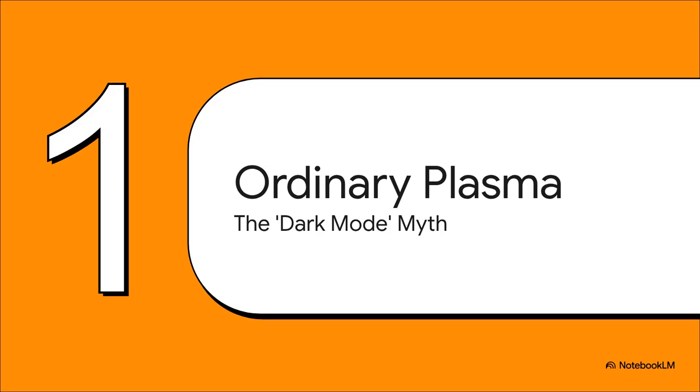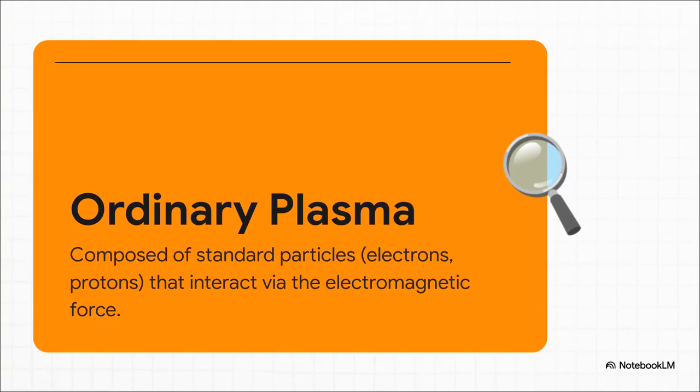Okay, so before we get to the really wild exotic stuff, we've got to clear the air about what dark plasma is not. And that means we have to start by busting this myth of ordinary plasma just flipping a switch into some kind of dark mode. So let's do a quick refresher. Ordinary plasma, right? It's the fourth state of matter. It's what happens when you superheat a gas, and I mean really heat it until its atoms just rip apart into charged particles, you know, electrons and protons. It's actually the most common state of matter in the universe. It makes up our sun, all the stars, the whole shebang.